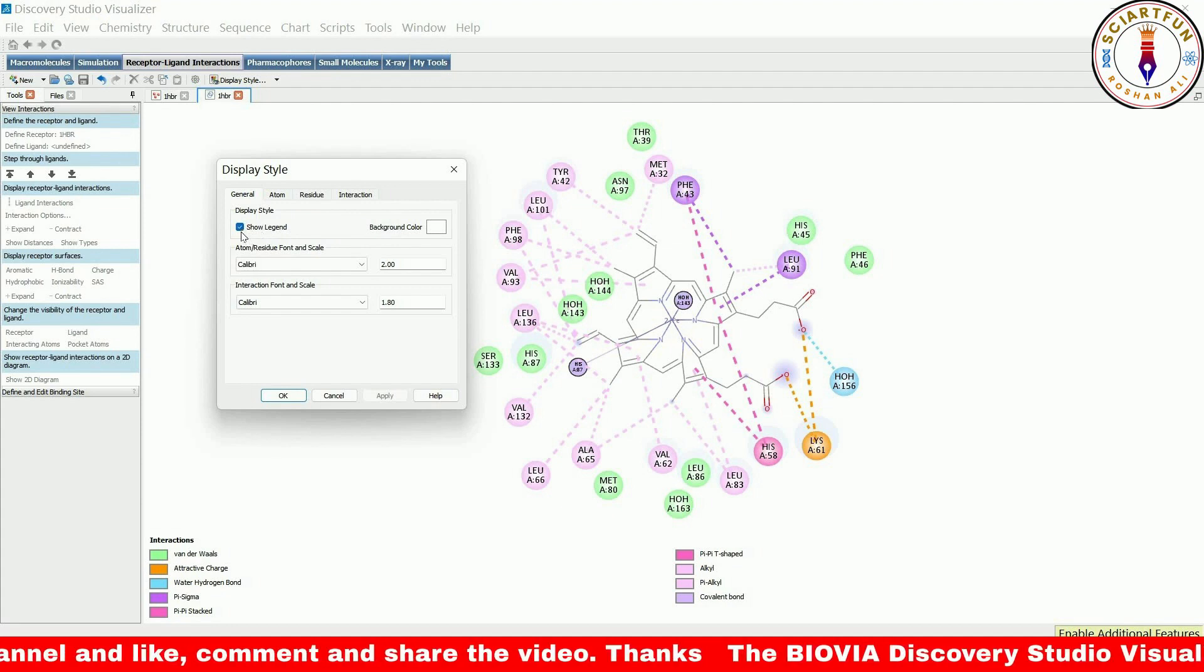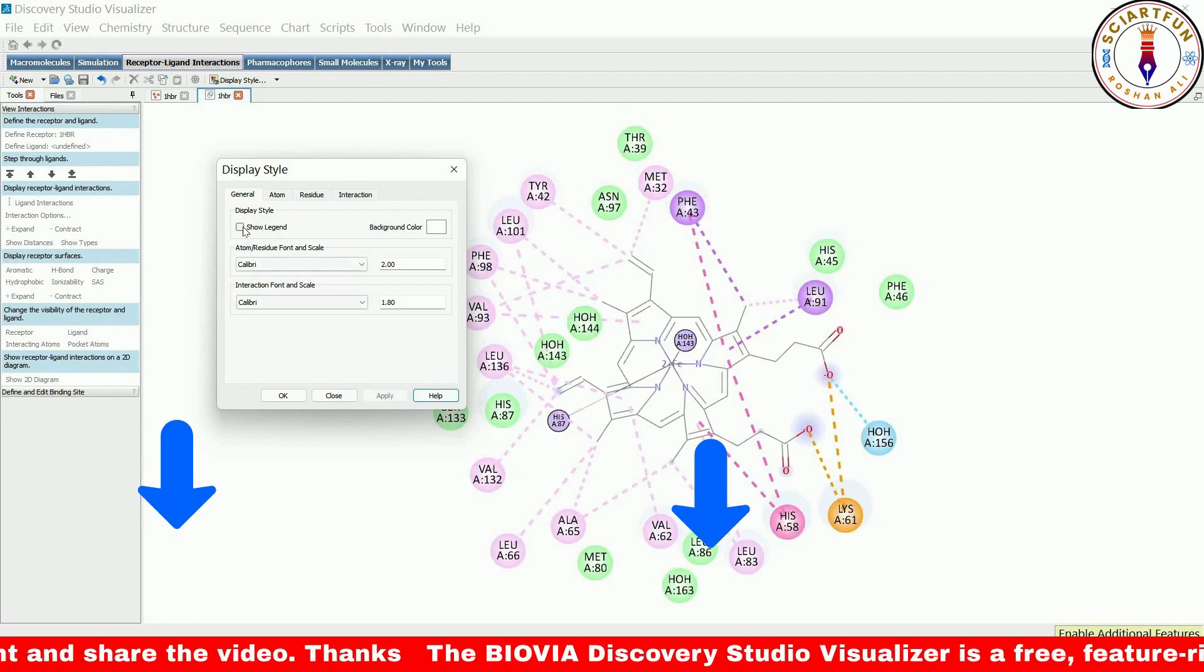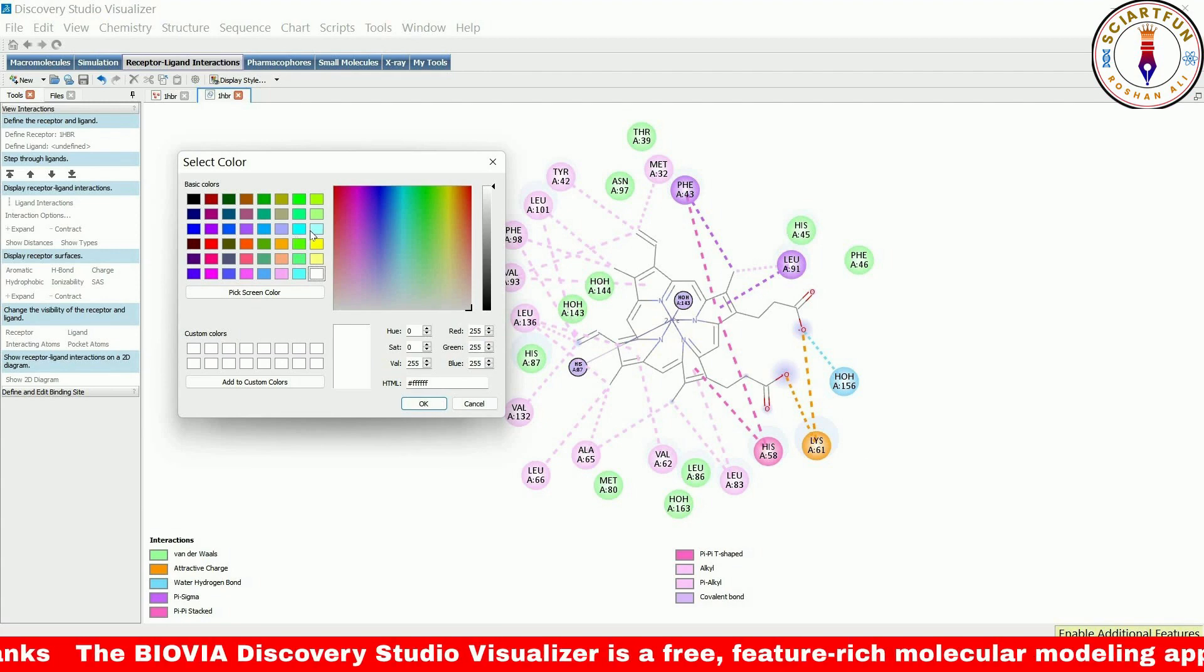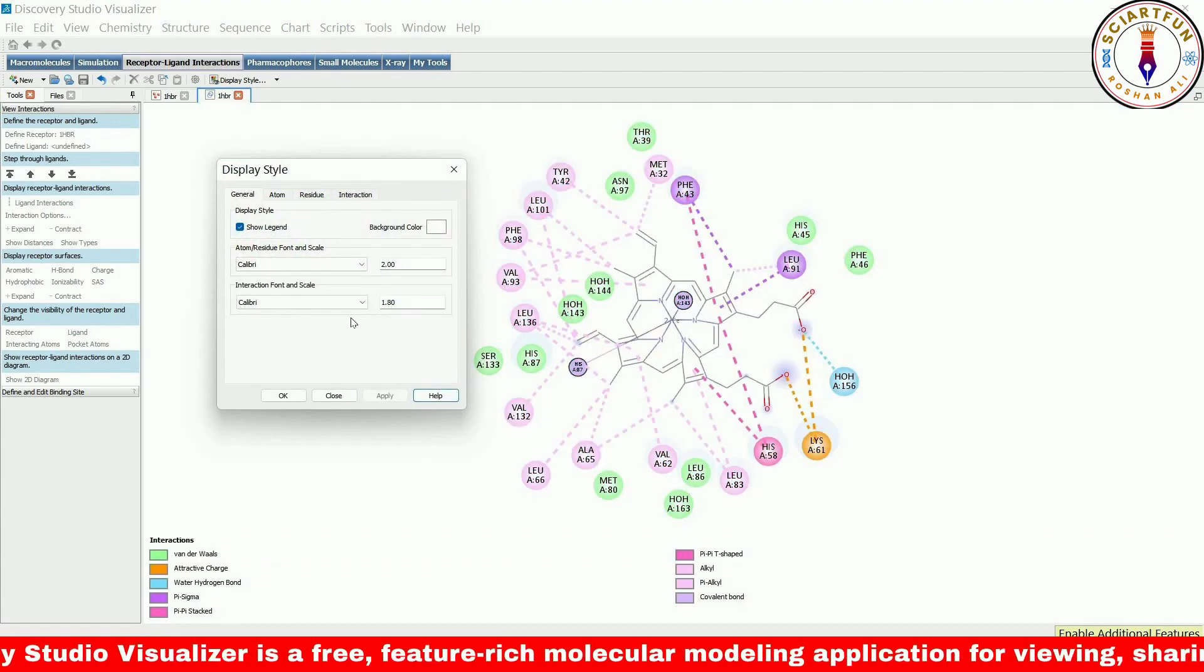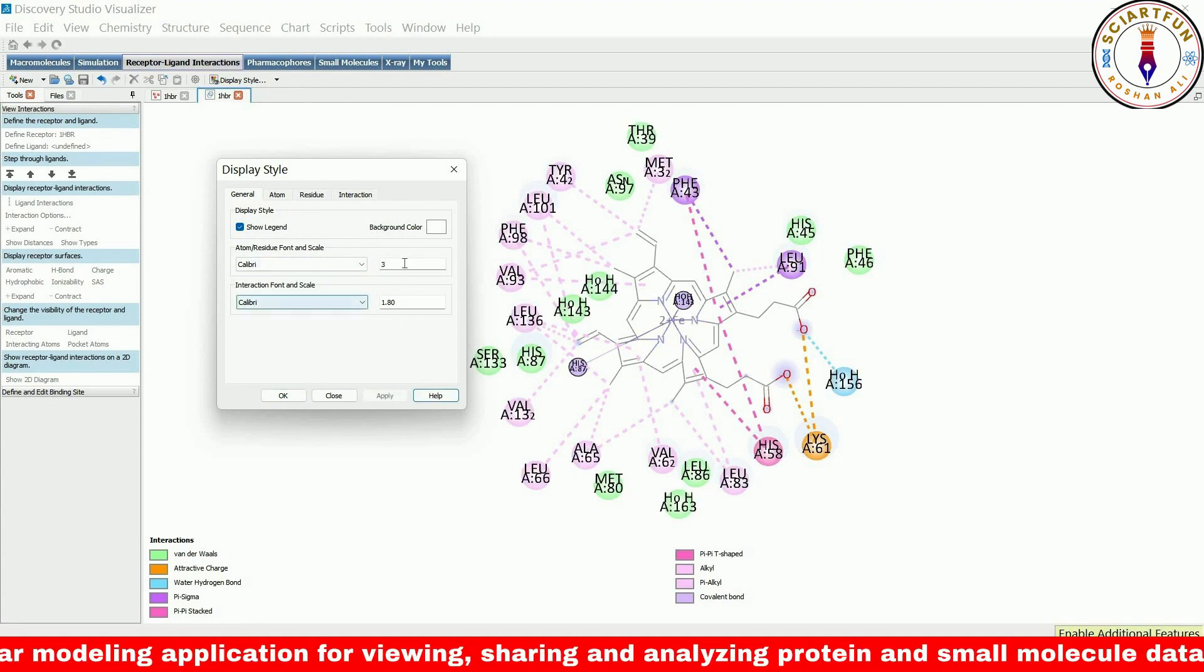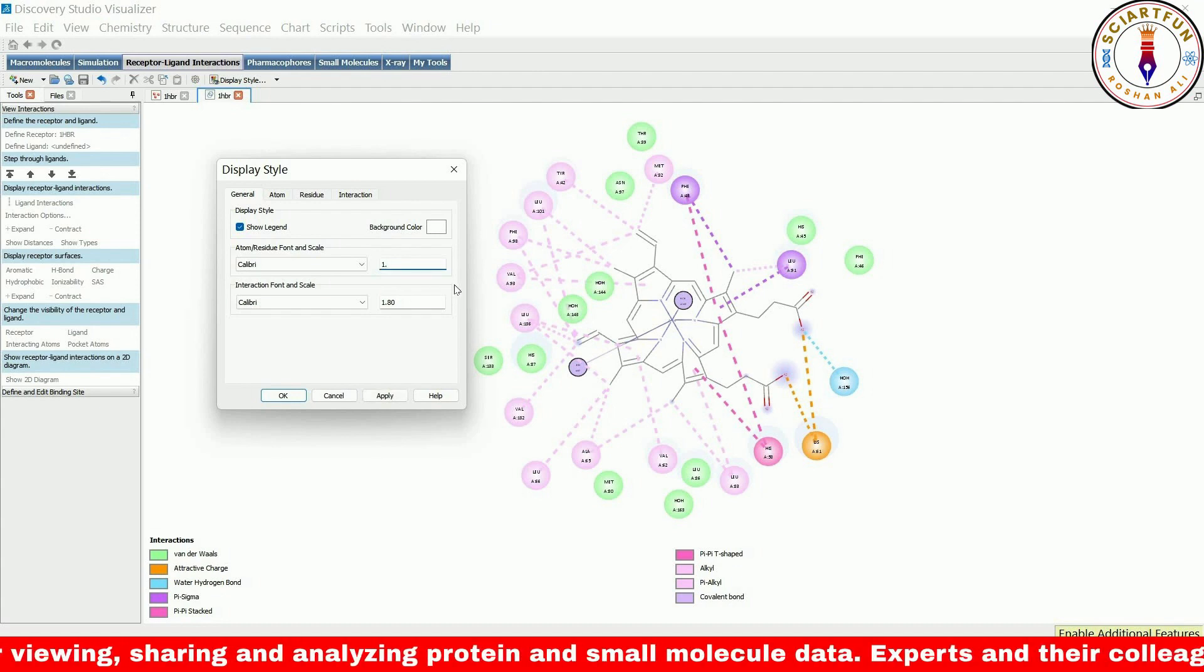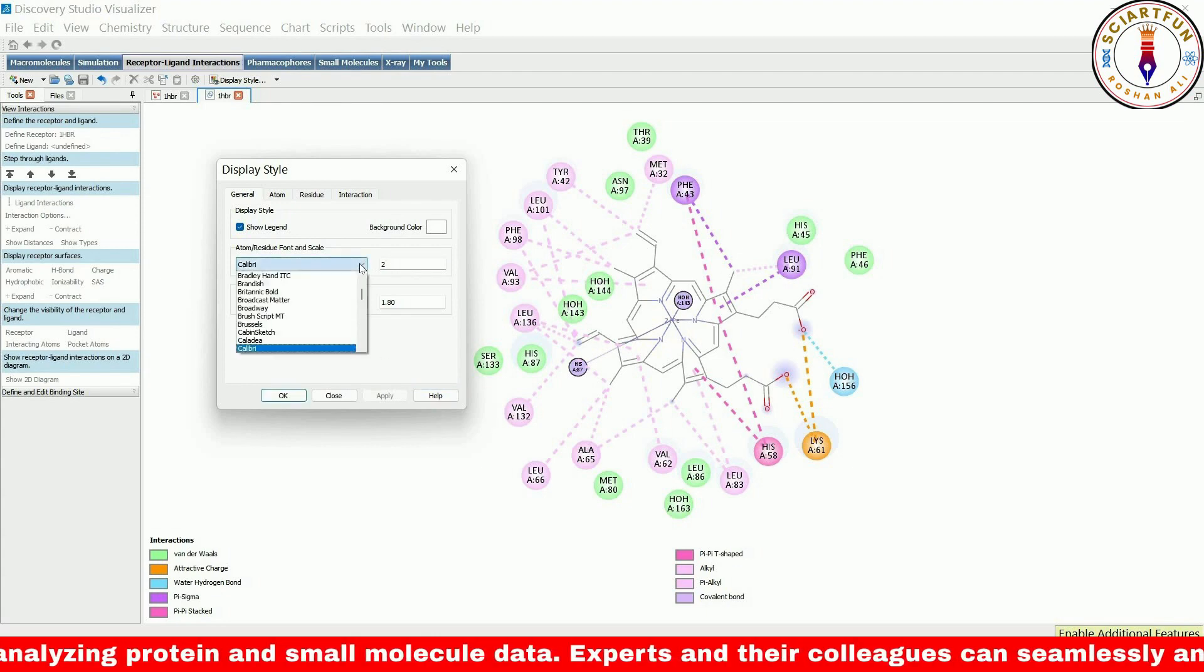In the general tab, we have the option to show or hide the ligand. We can also change the color of the background and increase the font size of atoms and residues. We can also change the font style of the text.